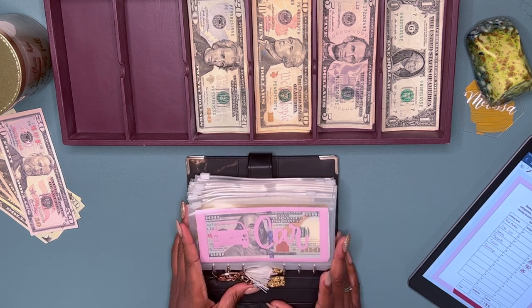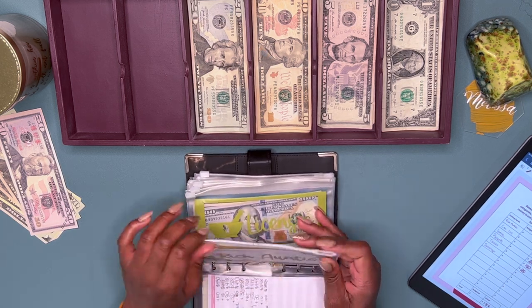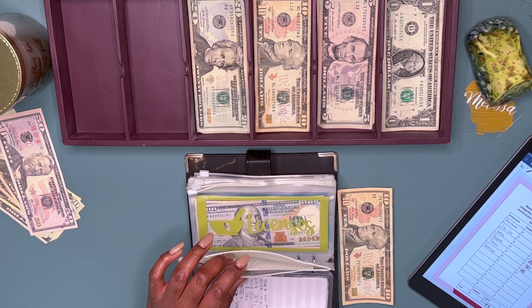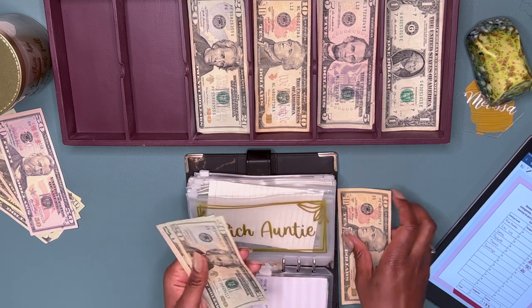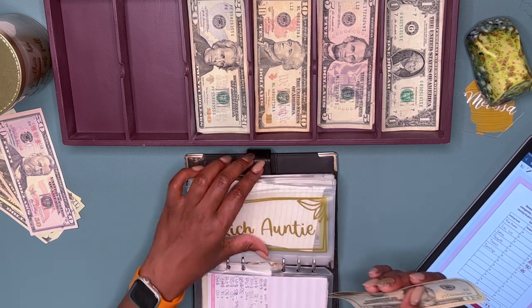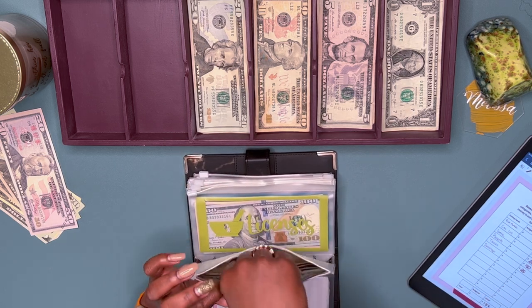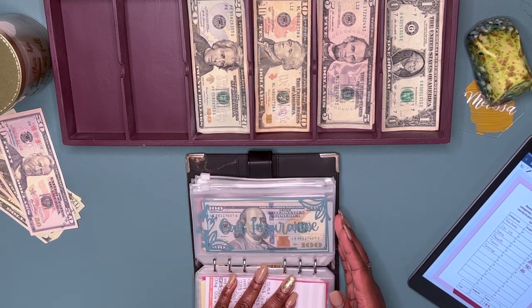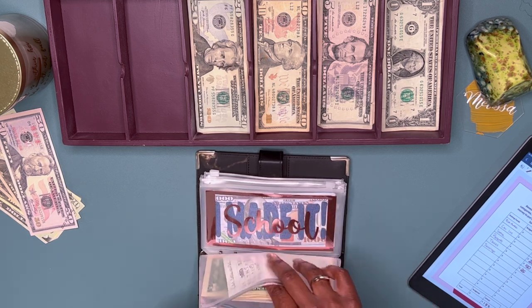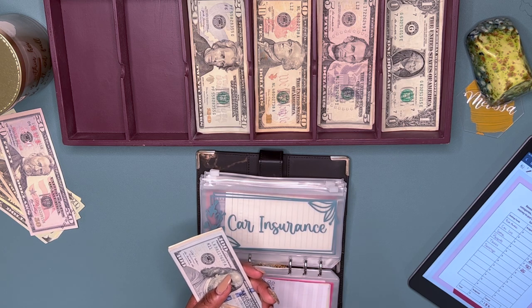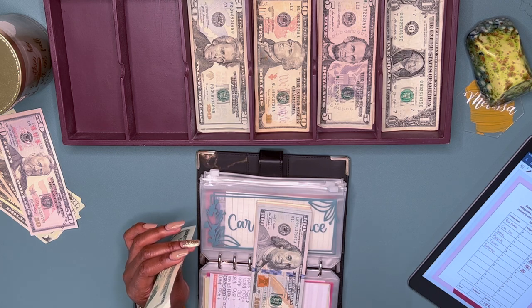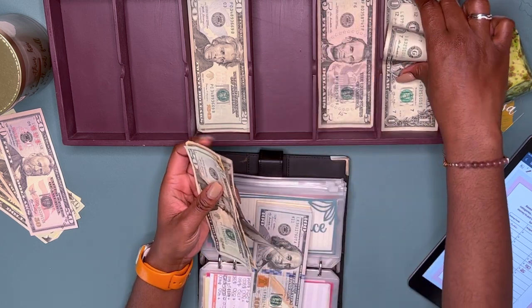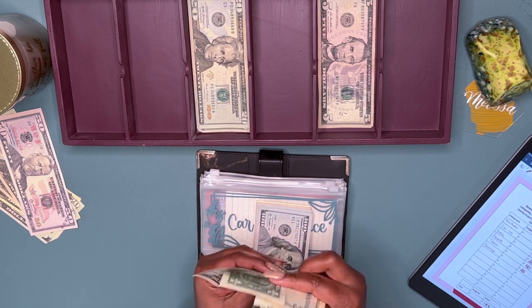For the first sinking funds binder, I'm only putting money towards rich auntie, and that'll be a $10 bill. So now I have $55 for this envelope. Next is going to be car insurance, because I have to pay the car insurance premium next month, and it's like $910. So I'm doing $37 today. So I'm going to do a 20, a 10, a 5, and two 1s.